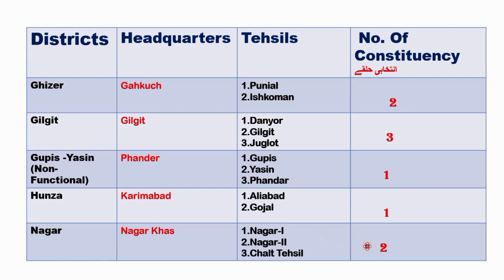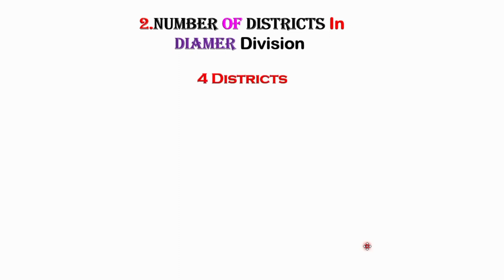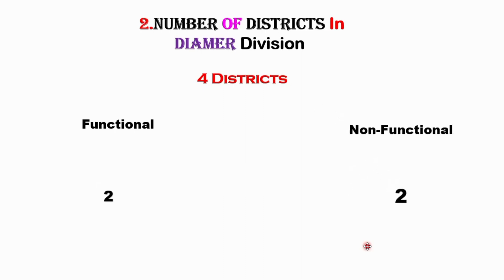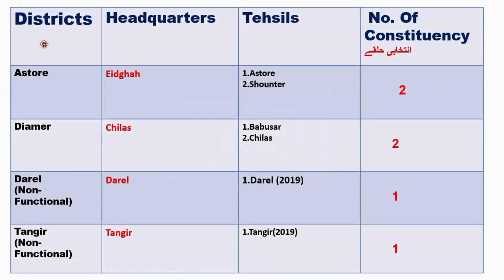Now let's move to Diyamar Division. There are four districts in Diyamar Division. Out of these four, two districts are functional and two are non-functional. The districts are: Astor, Diyamar, Daryl, and Tangir. Astor and Diyamar are functional districts, while Daryl and Tangir are non-functional.